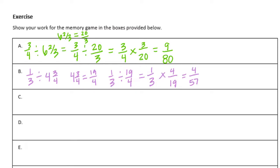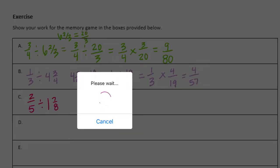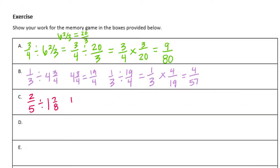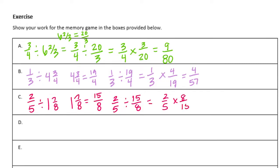Two-fifths divided by one and seven-eighths. One and seven-eighths is equal to eight plus seven is fifteen-eighths. So we have two-fifths divided by fifteen-eighths. I'm going to invert and multiply: two-fifths times eight-fifteenths. Two times eight is sixteen, five times fifteen is seventy-five, so sixteen seventy-fifths.